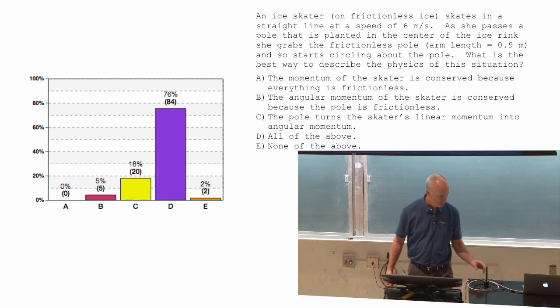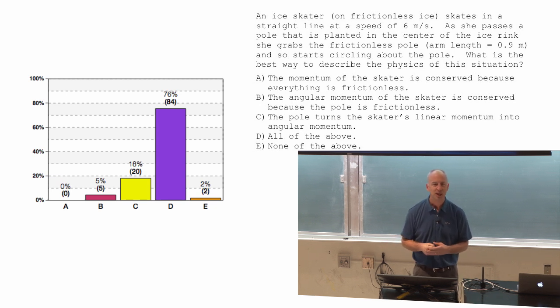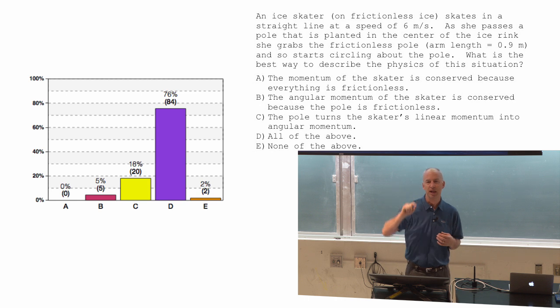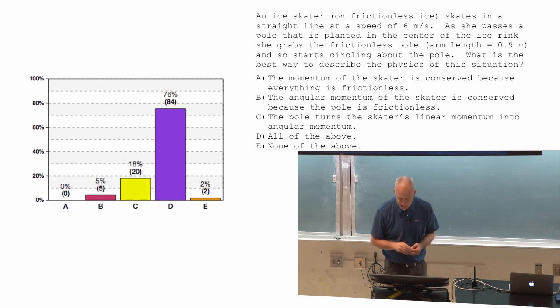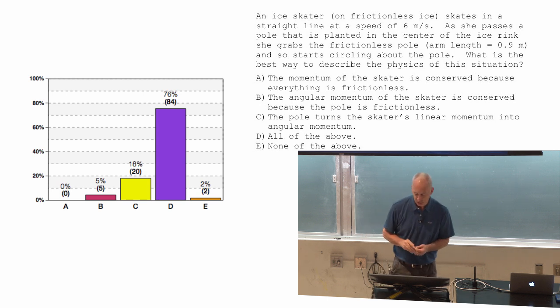If her momentum was to be constant the whole time, constant means in direction as well as magnitude, and that would just mean she kept going in a straight line the whole time and didn't grab the pole. B, the angular momentum of the skater is conserved because the pole is frictionless.